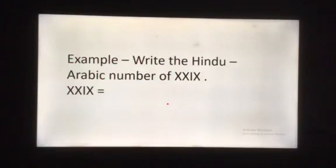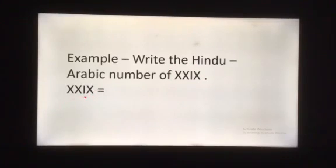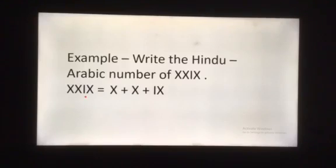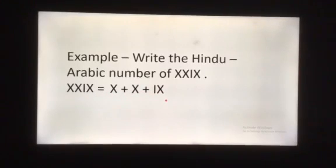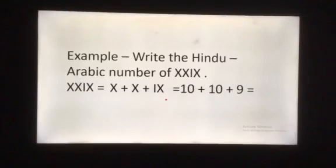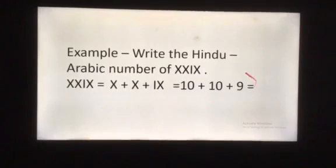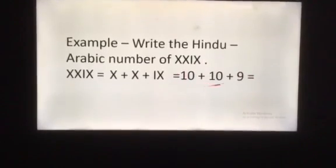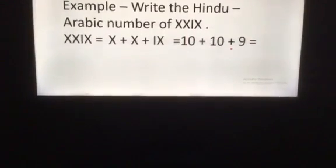Example 2. Write the Hindu Arabic number of XXIX that means X plus X plus IX. Here, first X is equal to 10, second X is equal to 10, and IX is equal to 9. On adding 10 plus 10 plus 9, we get 29 as an answer.